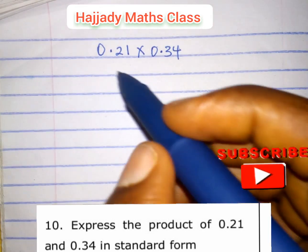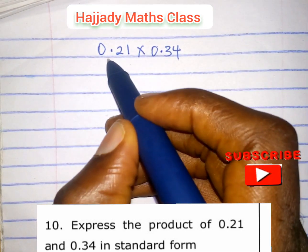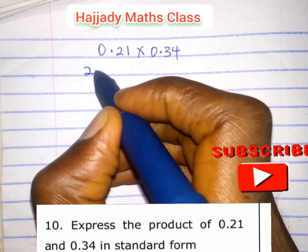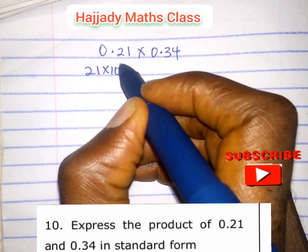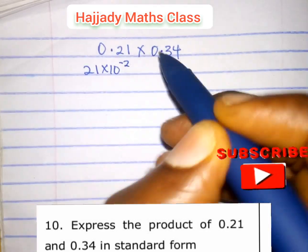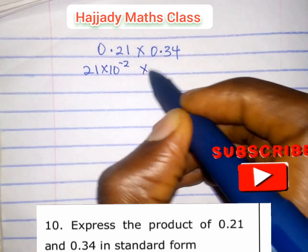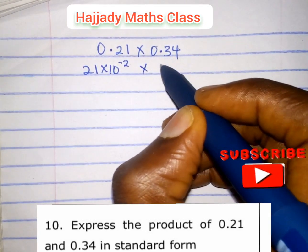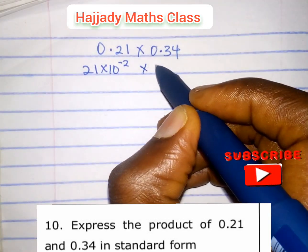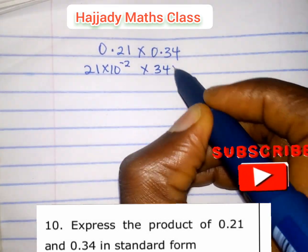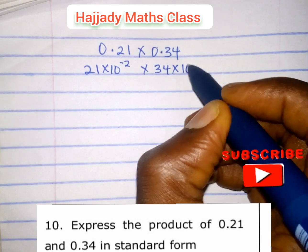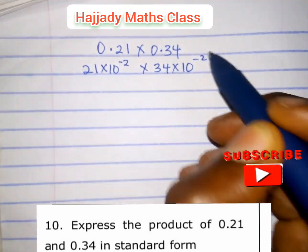Doing this, we convert to standard form. 0.21 in standard form is the same as 21 times 10 raised to the power minus 2. Times 0.34 in standard form is the same as 34 times 10 raised to the power minus 2.